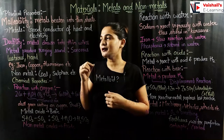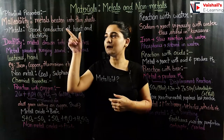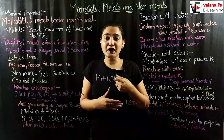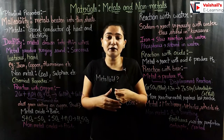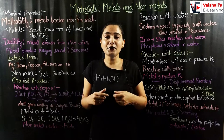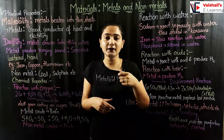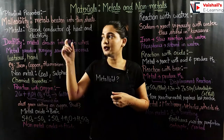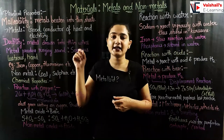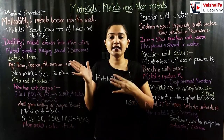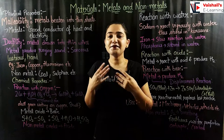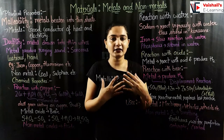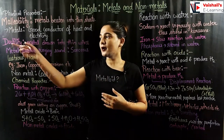Metals are good conductors of heat and electricity. For example, if you try to lift a hot aluminium utensil you cannot, but if it has a wooden handle you can, because wood does not conduct heat. Similarly, switches are made of plastic because plastic cannot conduct electricity, whereas metals can conduct both heat and electricity.